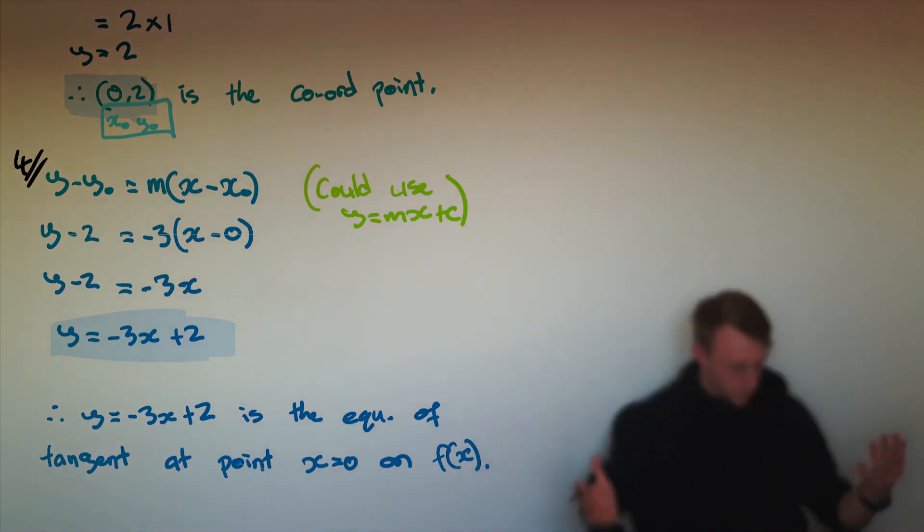And then we just write a little concluding statement to say, look, we've found our equation of the tangent, which is y equals negative 3x plus 2 at the point x being equal to 0.